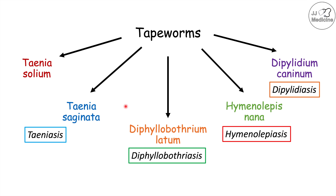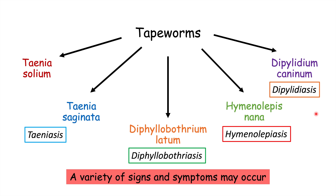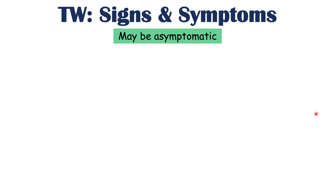Because there are multiple species of tapeworms and multiple resulting conditions, there is a variety of signs and symptoms that may occur. For the most part, the majority of symptoms overlap across these tapeworms. Specific details will be noted when a sign or symptom occurs more commonly with a particular species. Having a tapeworm may actually lead to no symptoms at all — it may be asymptomatic, especially in adult patients. In children, signs and symptoms are more likely to be present and more severe.